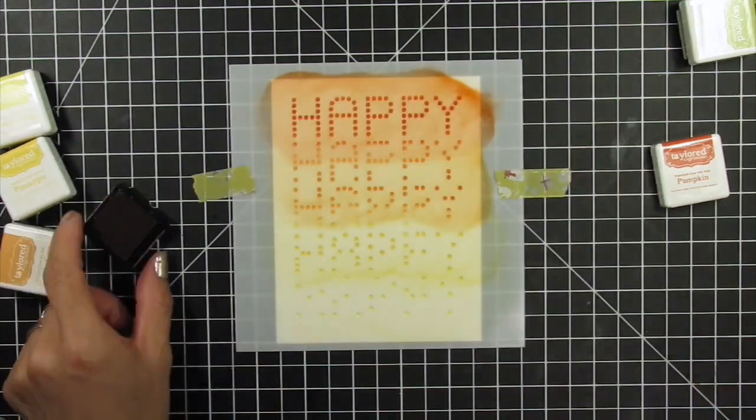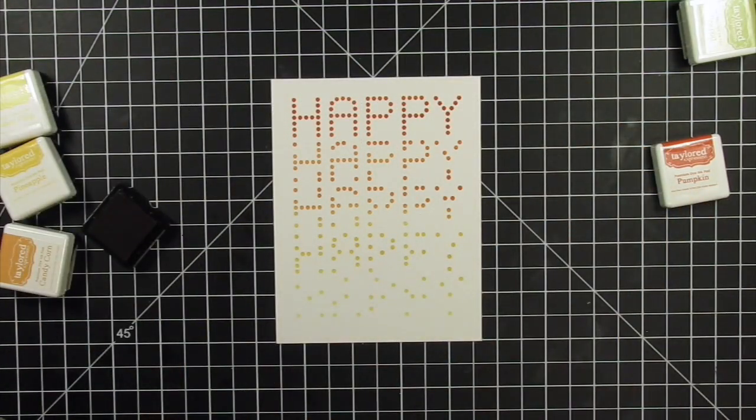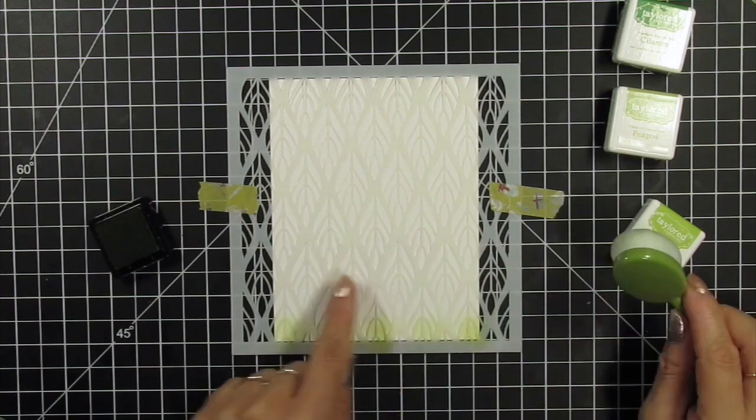I love how these four colors look on their own, as well as the way they transition into one another to create an ombre effect with the Falling Happy stencil.